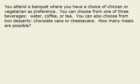This is called the fundamental principle of counting, or sometimes the multiplication rule for counting. That rule says that if you have the number of ways that you can do a sequence of things, then you can multiply the number of ways to get the total number of ways.